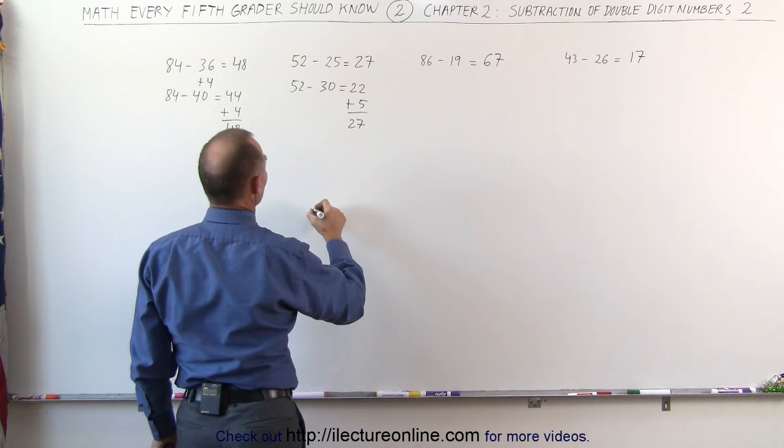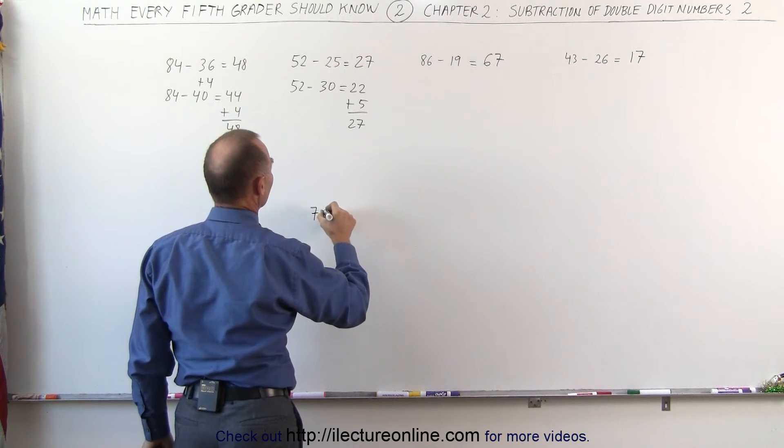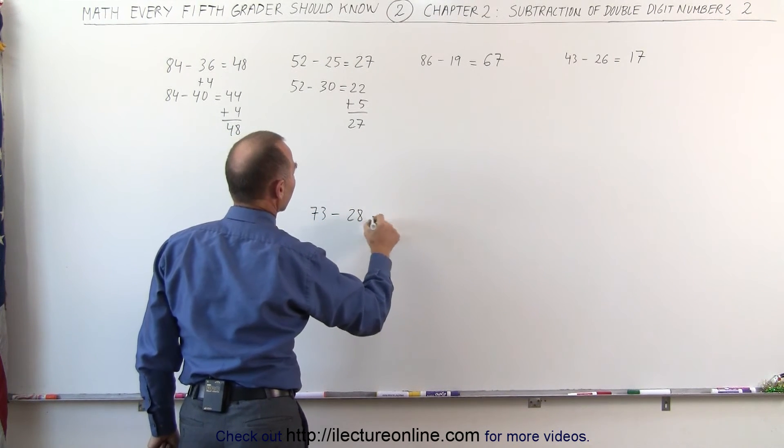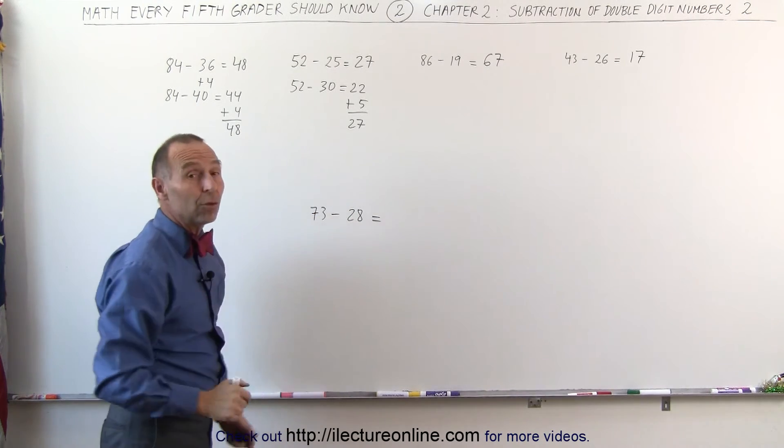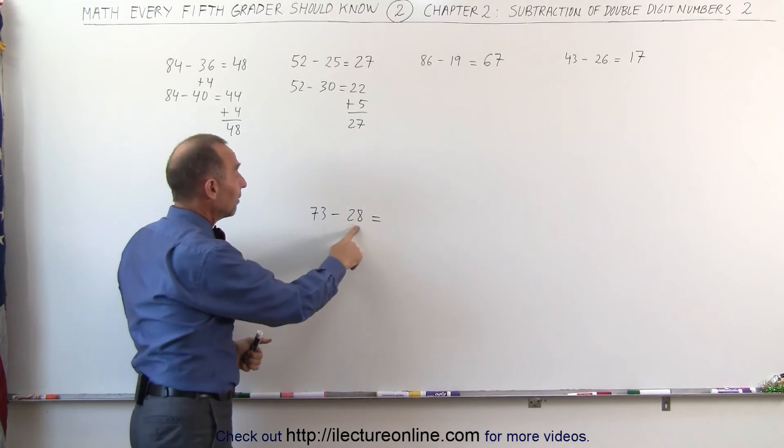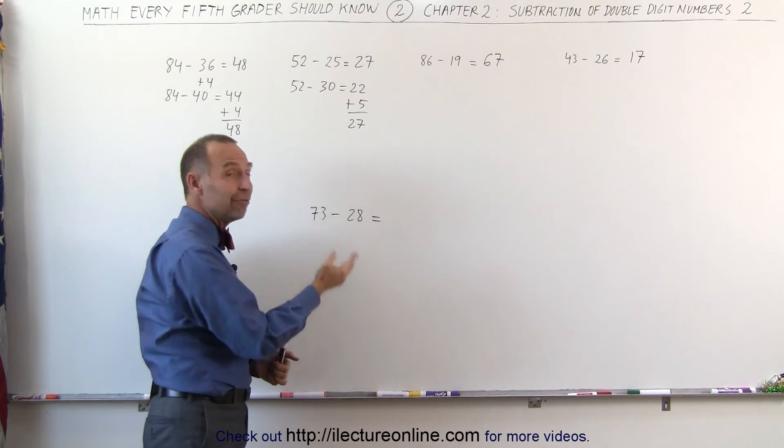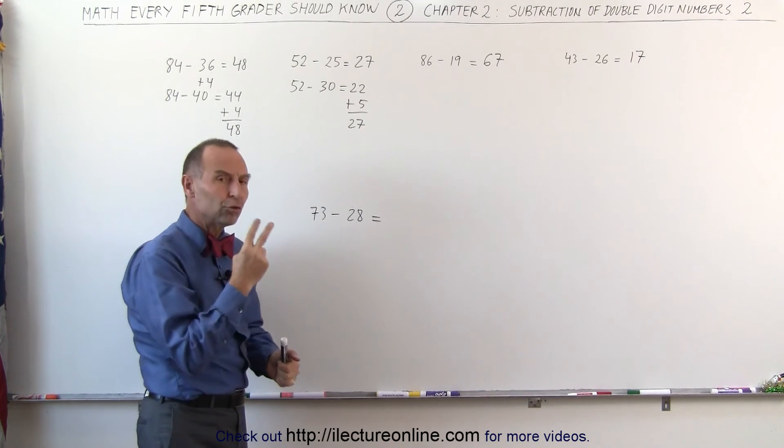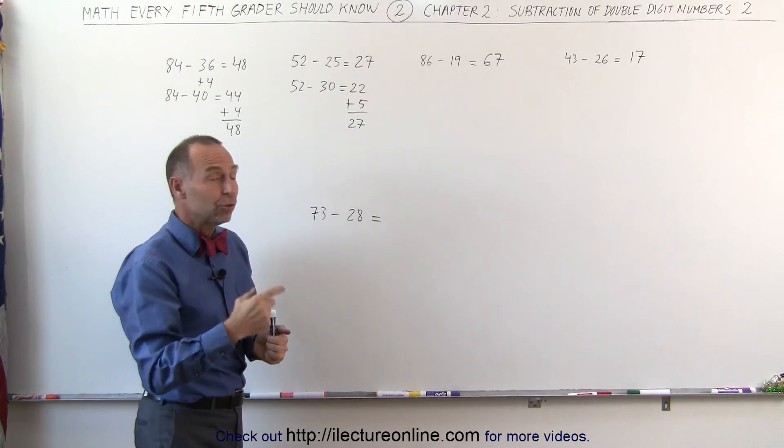Let's take the number 73 minus 28. Let's turn that into 30. So I need to add two more to that. 73 minus 30 gives me 43. But I subtracted two more than I should. 43 plus 2 gives me 45. And that's the answer.